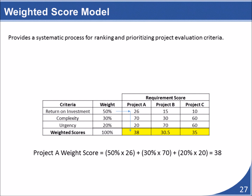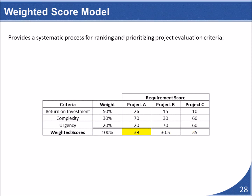Having selected the criteria, specified the weights, and evaluated the various scores for each project, the only thing left is to calculate the weighted score for each project. To do so, take each criterion's weight and multiply it by the project's criteria score, then sum up the weighted scores to get the project's overall weighted score. Based on these calculations, Project A has emerged as the most preferable project with the highest score and would be selected.